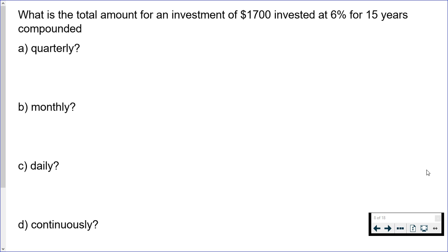This video contains an example about the compound interest formula, and I'm actually going to use two different ones. I have this scenario: what is the total amount for an investment of $1,700 invested at 6% for 15 years? I have these different compounding periods, so A through C it's